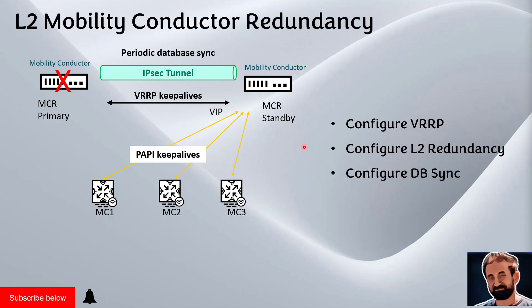To achieve this, we will configure VRRP and Layer 2 redundancy on both the primary and the standby conductors, and also configure database sync between them. I'm going to use the GUI interface to establish the commands so it's easier to understand, and I will also refer to the command line to show how they look there, and we will perform some verification in the command line.